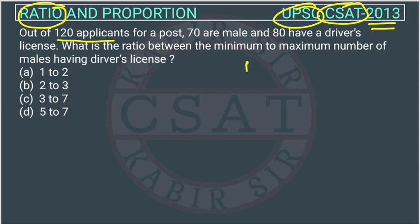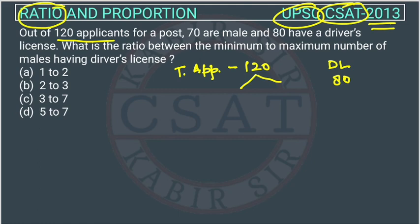So what is given? Total applicants are 120. How many are having a driving license? Only 80 people are having a driving license. Out of the 120, 70 are male.